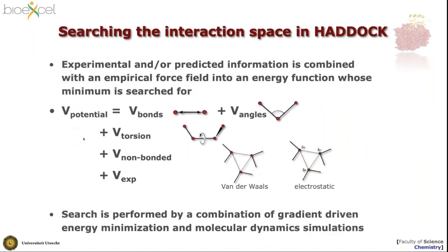In HADDOCK we try to use experimental or predicted information to guide the modeling, using classical force fields with energy functions representing the chemistry and physics of the system — bond angles, torsions, and non-bonded interactions — and we add additional energy terms to represent the data that we have. This is similar to structure calculation by NMR or refinement using crystallographic data.